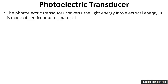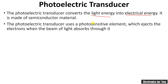Let us see what is a photoelectric transducer. The photoelectric transducer converts light energy into electrical energy — it is one transducer which converts light energy into electrical energy. It is made up of semiconductor material and uses a photosensitive element. Some photosensitive elements are used which eject electrons when the beam of light is absorbed through them.